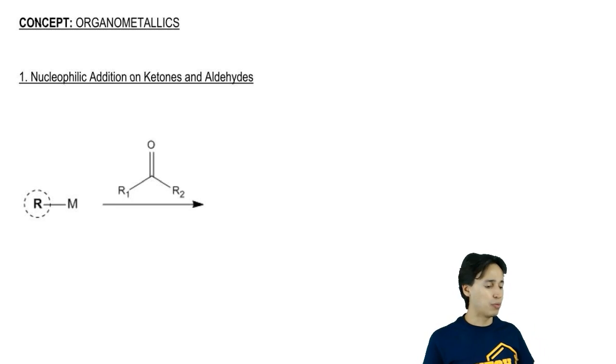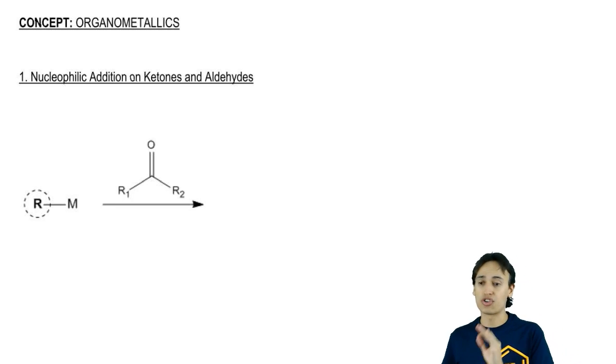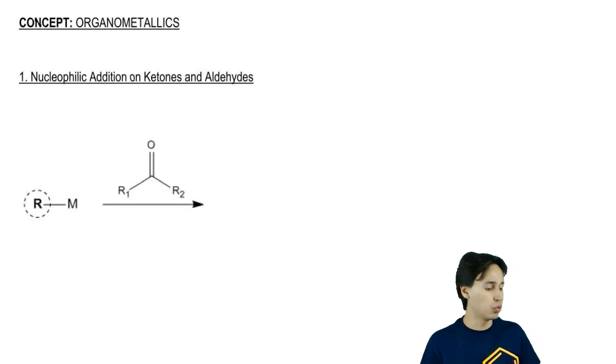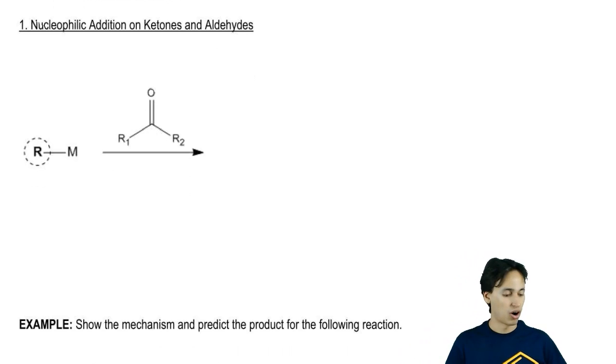Remember that we can use the letters R and M to represent any organometallic because there's always going to be some kind of R component, some kind of alkyl group and some kind of metal. The two that are the most common in this section are grignards. So grignards would be R-MgBr. That would be a grignard.